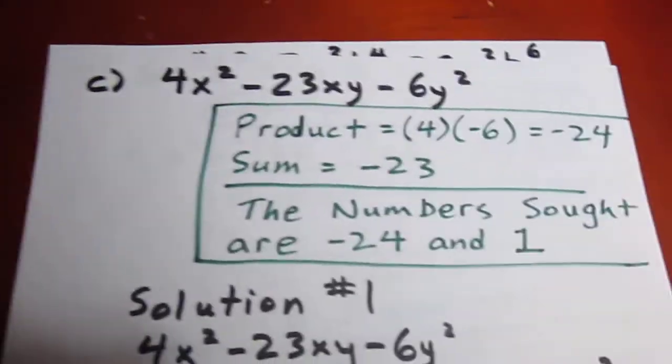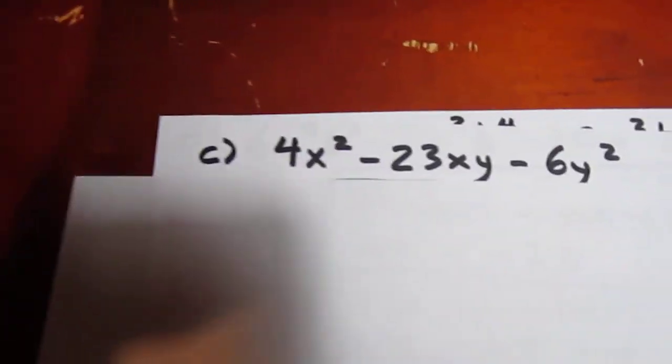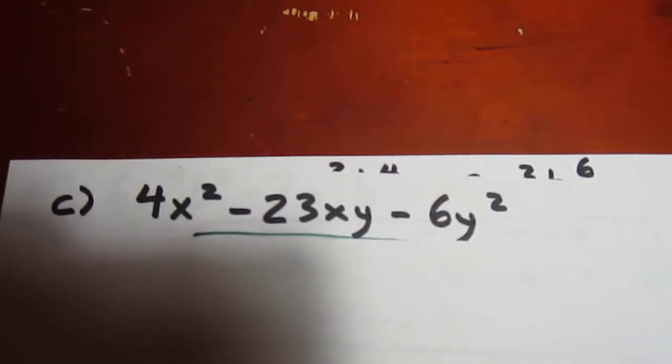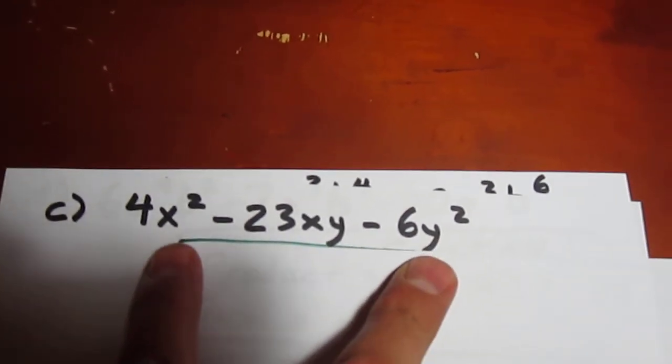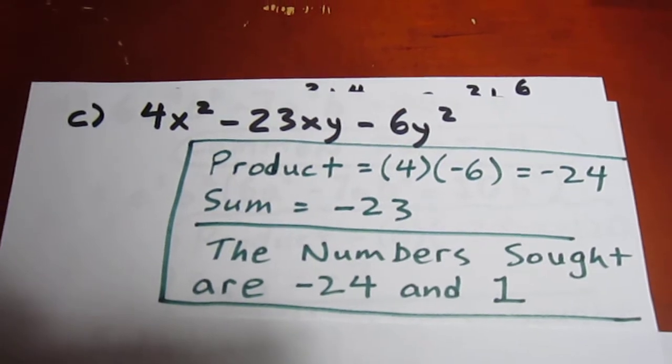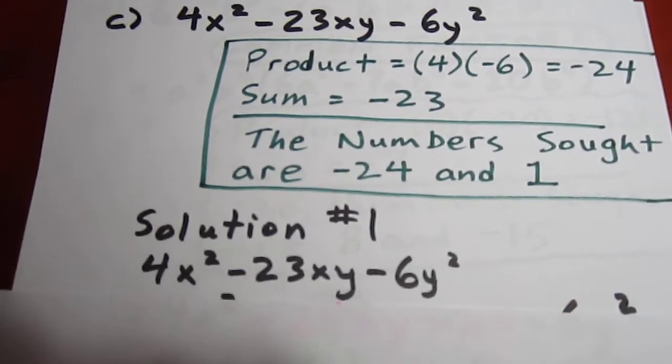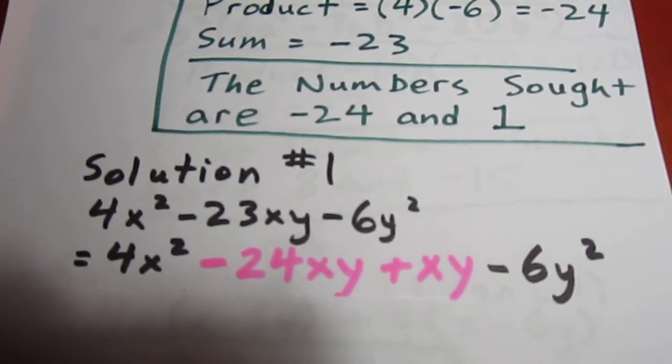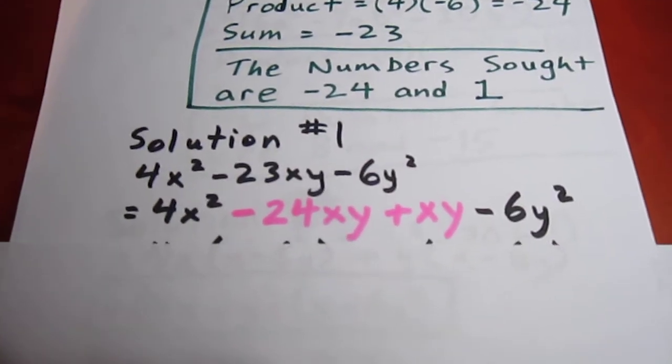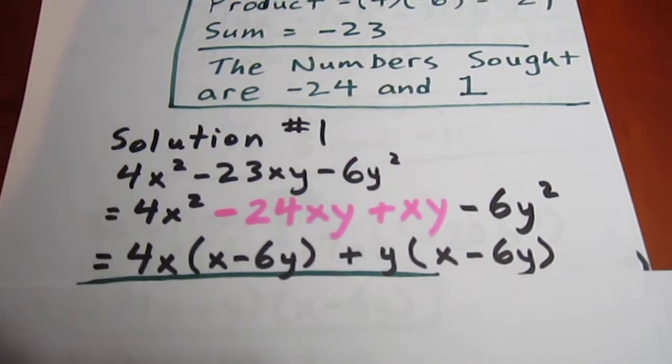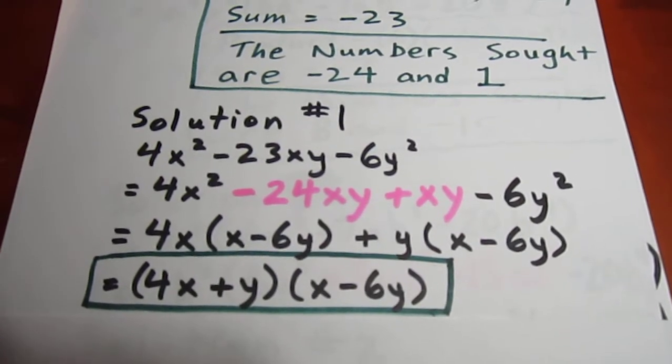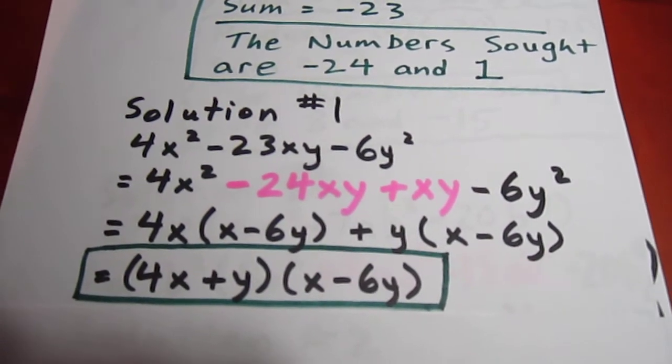Moving on then to our next one. This one sometimes people think is a little more difficult because it has a second variable. We don't have to really think of it that way though because decomposition will work. We want two numbers with a product of -24 and a sum of -23. The two numbers being sought are therefore -24 and positive 1. We decompose the middle term into -24xy + 1xy. We can then common factor 4x out of the first two terms and common factor y out of the last two terms. Doing that gives us a common binomial factor of x - 6y. And we can combine in that last step the way we've been doing and get 4x + y times x - 6y.